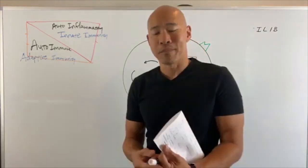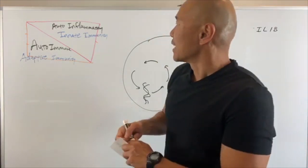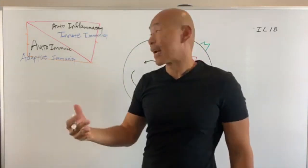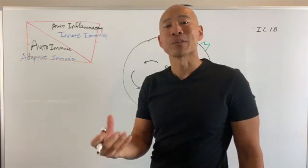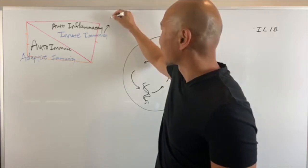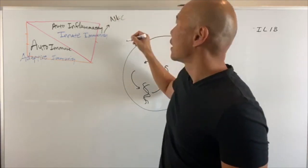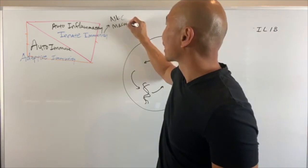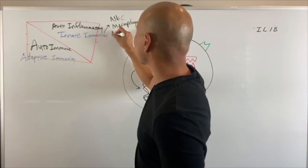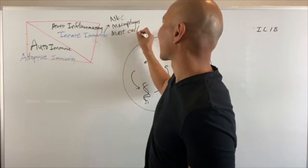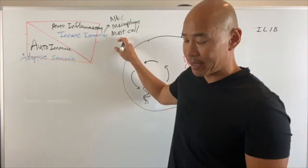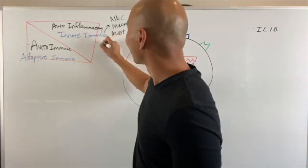Your immune system has two main branches. Innate immunity is that part of your immune system already within your body — it came in your cells. Every single cell in your body has this. Examples of innate immunity include natural killer cells, macrophages, and mast cells. A lot of people have what's called mast cell activation syndrome — mast cells are a type of innate immune cell.